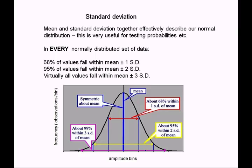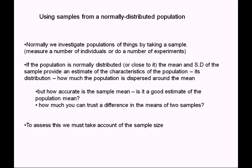If we extend to two standard deviations above and below the mean, that covers about 95% of the distribution. Three standard deviations above and below covers just about the whole distribution. This allows us to use mean and standard deviation to compare distributions, and to say whether an individual value we've measured is likely to belong to that population.